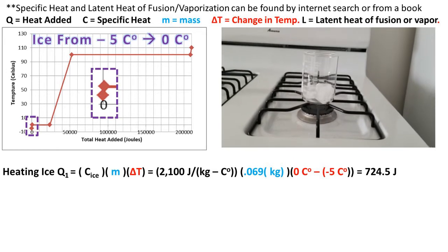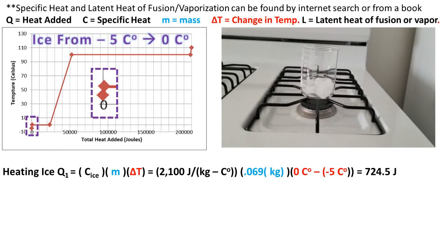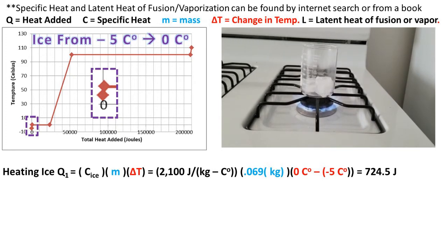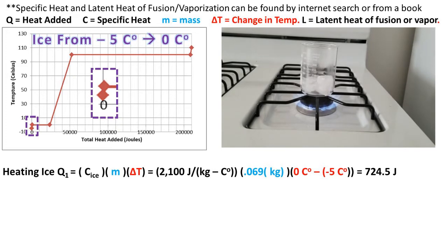For the first step of this problem, we need to find out how much heat it takes to raise 0.069 kilograms of ice to the freezing point of 0 degrees Celsius. The equation for finding the heat energy needed to raise the temperature of ice is the specific heat times the mass of ice times the change in temperature. We can plug in our specific heat, or how much energy it takes to raise 1 kilogram of ice 1 degree Celsius, into the equation with the mass of ice in kilograms and the change in temperature, which is the freezing point of water of 0 degrees Celsius minus the initial temperature of negative 5 degrees Celsius. We get a heat added of 724.6 joules.